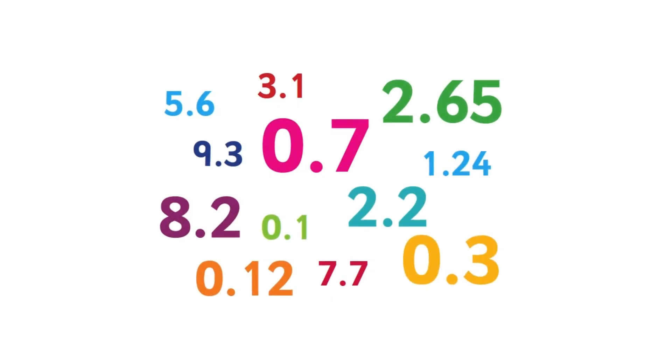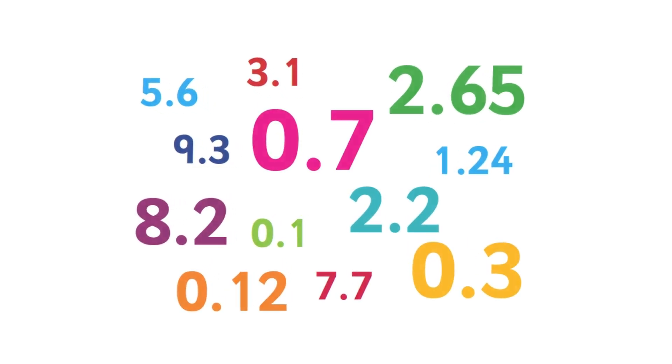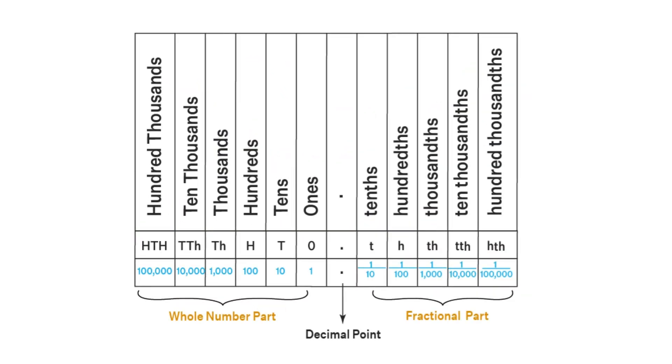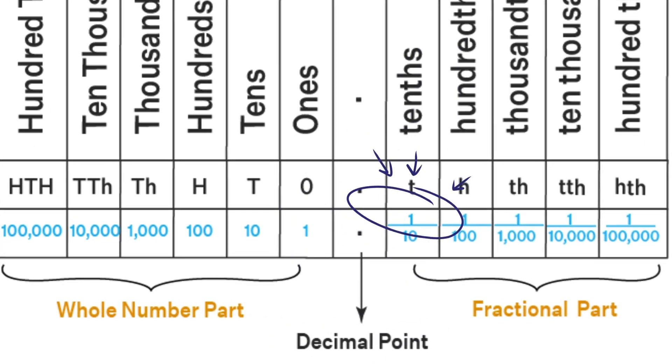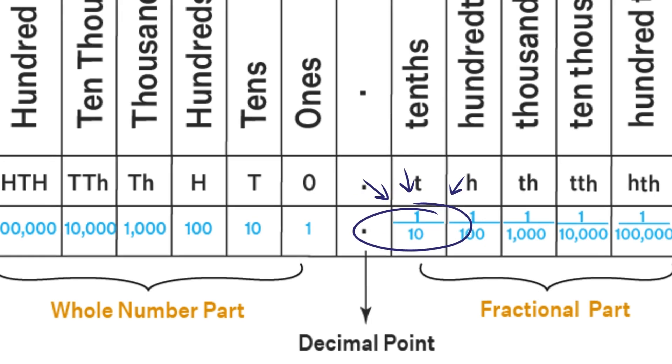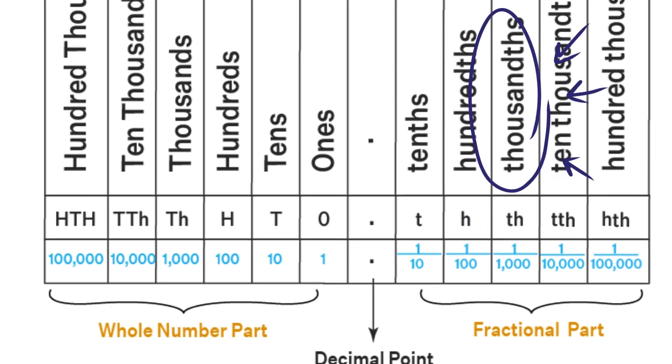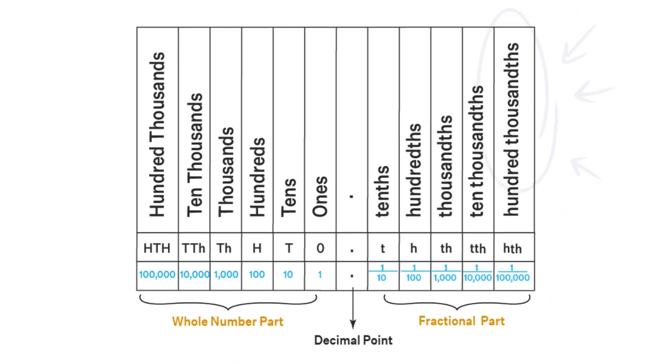Decimals. Decimals are a way of representing non-whole numbers. This involves using a dot placed after the ones digit, called a decimal point. To the right is the tenths place, where a tenth is 1 divided by 10. After that is the hundredths place, the thousandths place, and so on.